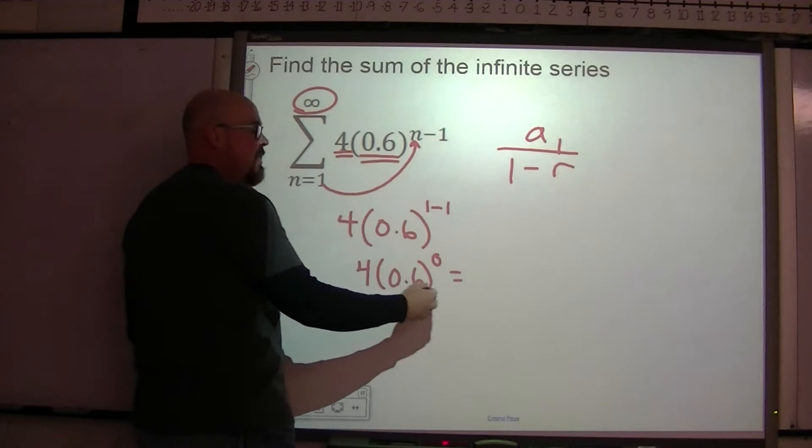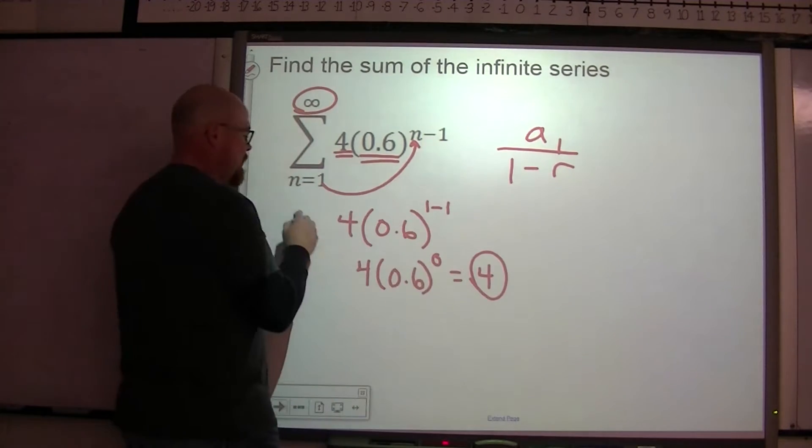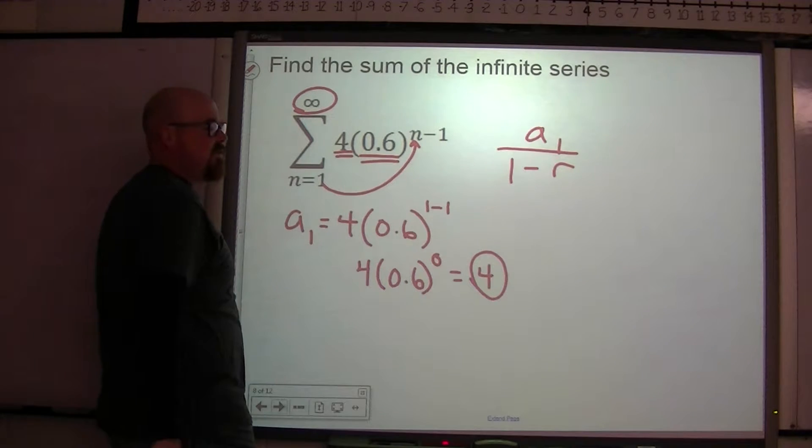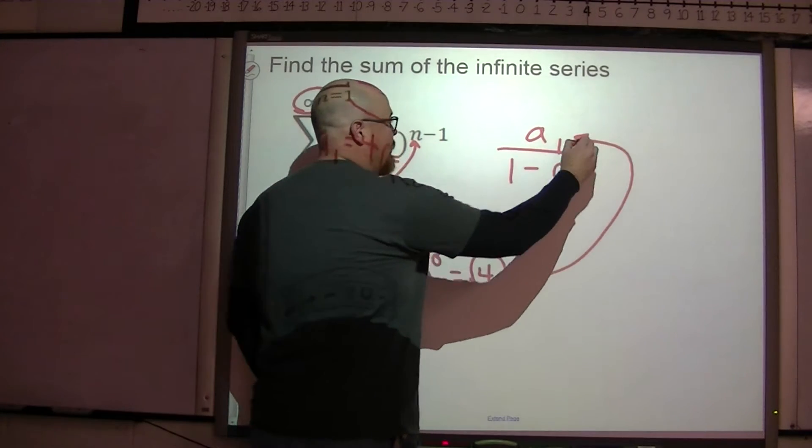Anything to the 0 power is 1, and 4 times 1 is 4. So this is us calculating the first term. So we know that 4 is going to go here.